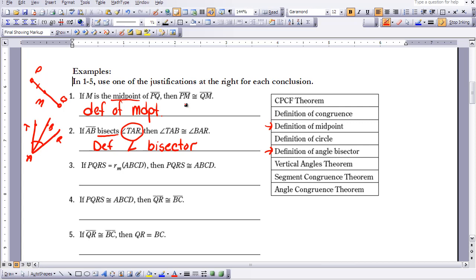The next one: if PQRS is equal to the reflection over line M of ABCD, then my two figures are congruent. Here we have an isometry that's been performed, and we know that our figures are congruent. That matches, as we studied in Lesson 1, the definition of congruence.